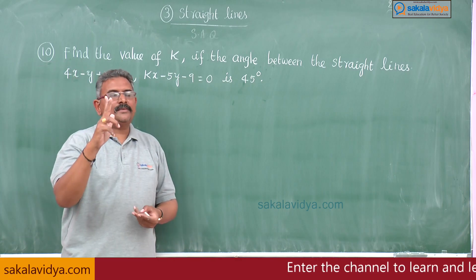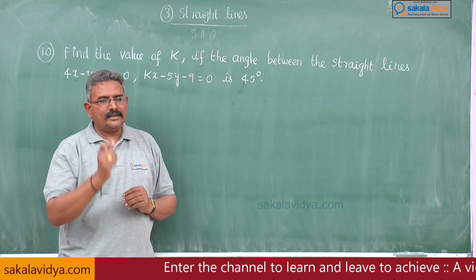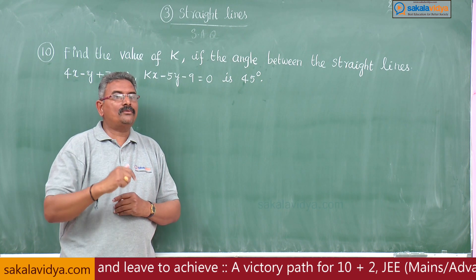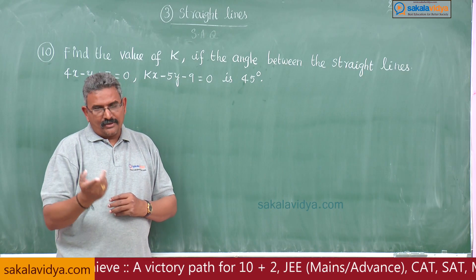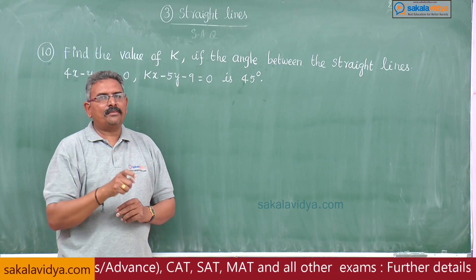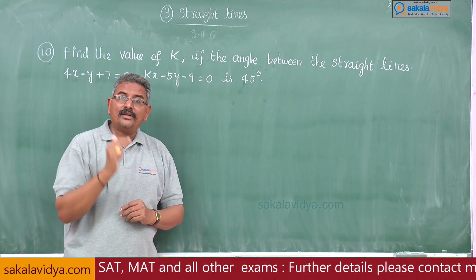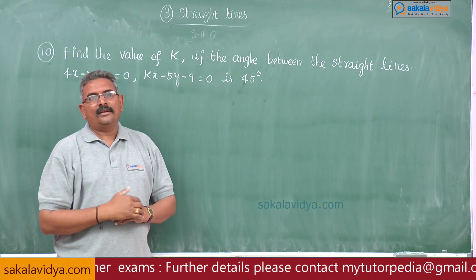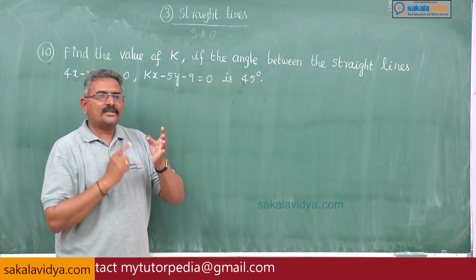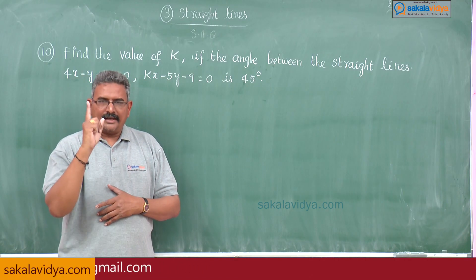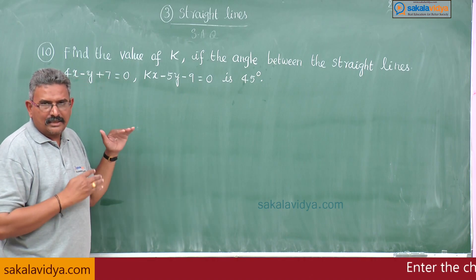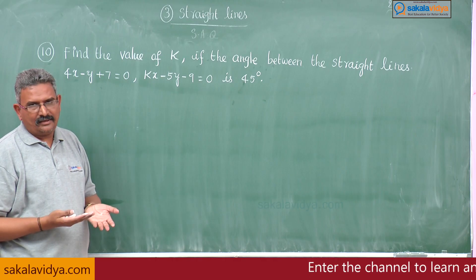The angle between two straight lines means we have to recollect the formula. Since theta is equal to 45, it is easy to use tan 45 — tan 45 equals 1, whereas cos 45 is 1 over root 2. So we use tan 45. The formula is: tan theta equals the modulus of (m1 minus m2) over (1 plus m1·m2), where m1 and m2 are the slopes of the two lines. First find m1, then m2, then substitute with theta equals 45 degrees to get k.